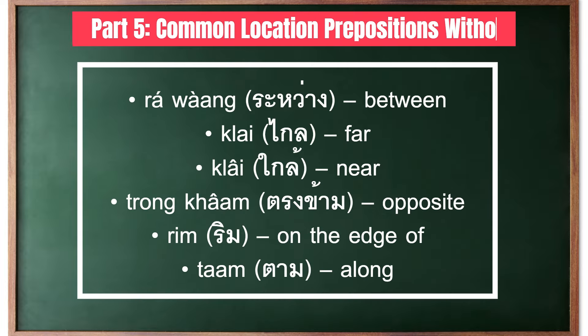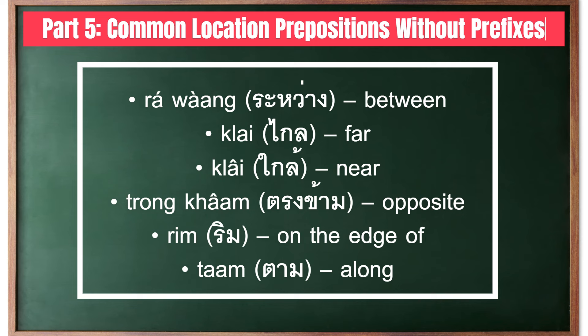Here are some useful prepositions that do not require a prefix. ระหว่าง means 'between'; ไกล means 'far'; ใกล้ means 'near'; ตรงข้าม means 'opposite'; ริม means 'on the edge of'; and ตาม means 'along'.